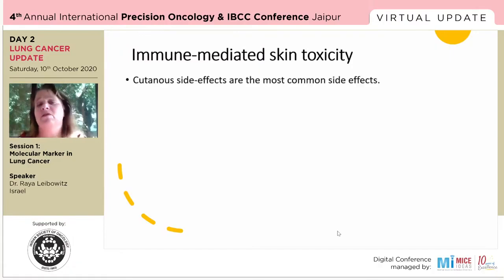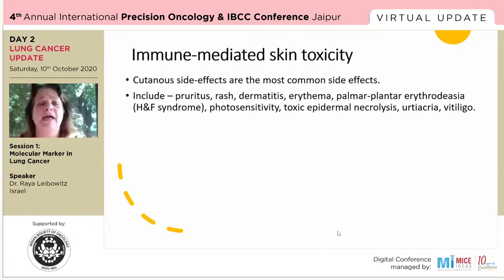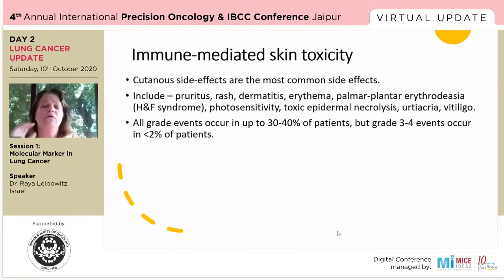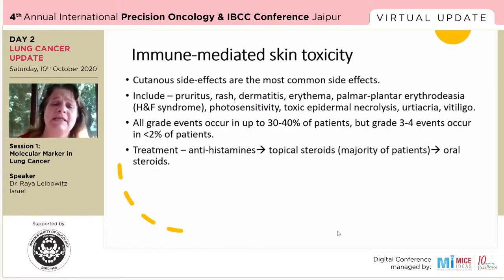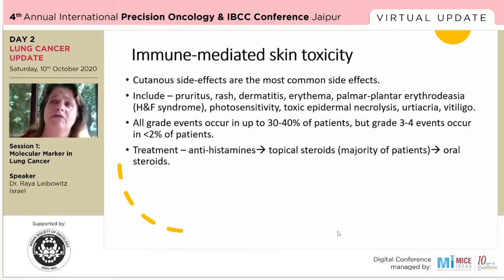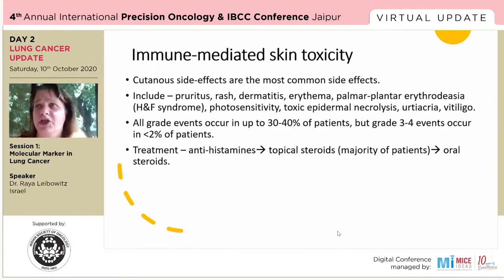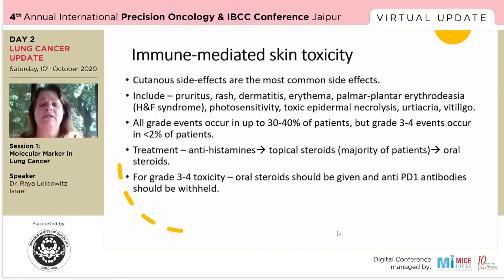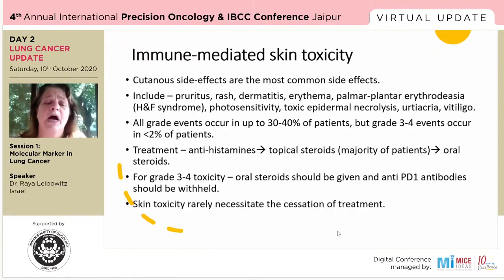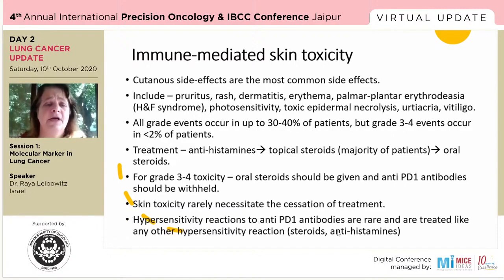Skin toxicity is the most common side effect and can come in all forms — pruritus, rash, dermatitis. Most events are low grade and manageable. Grade three to four events are very rare. Treatment starts with antihistamines, then topical steroids, and in some patients we cannot avoid oral steroids — which is a bit different from regular dermatology practice. For grade three and four toxicities — pemphigoid-type rashes or, God forbid, Stevens-Johnson type — we will never resume IO therapy. In most cases, skin toxicity does not necessitate cessation of treatment.